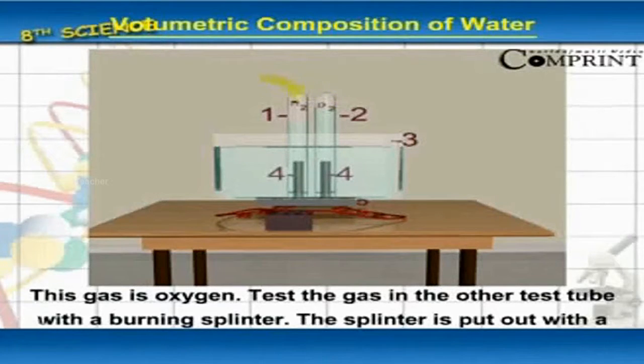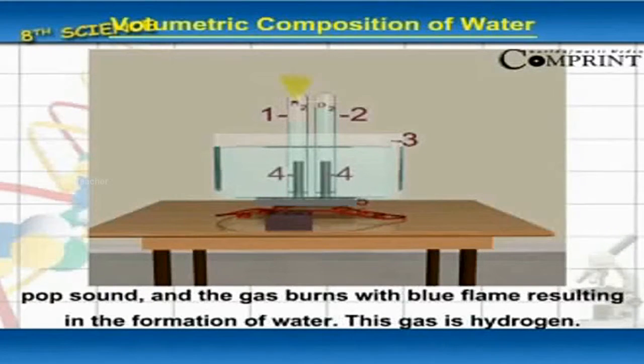Test the gas in the other test tube with a burning splinter. The splinter is put out with a pop sound and the gas burns with blue flame resulting in formation of water. This gas is hydrogen.